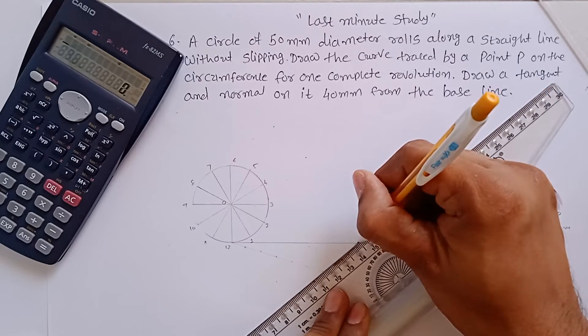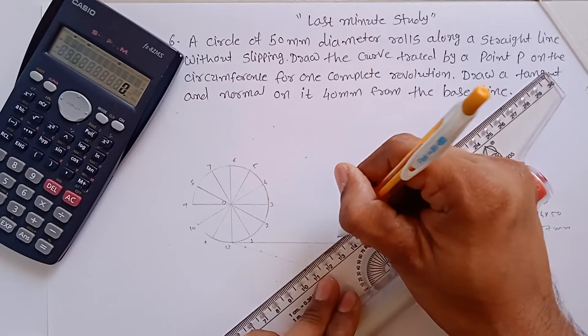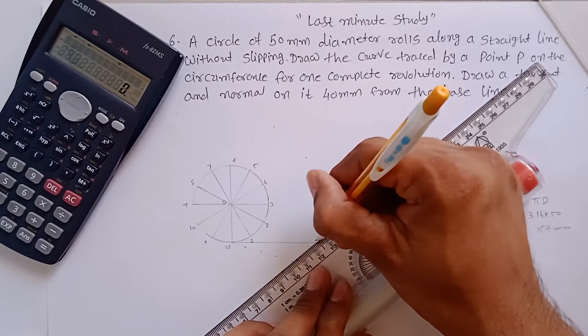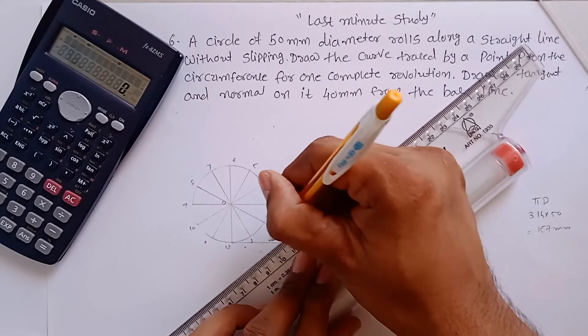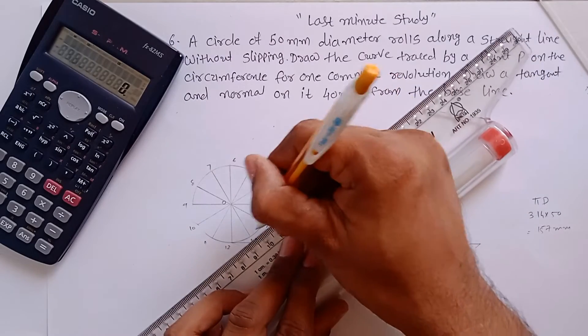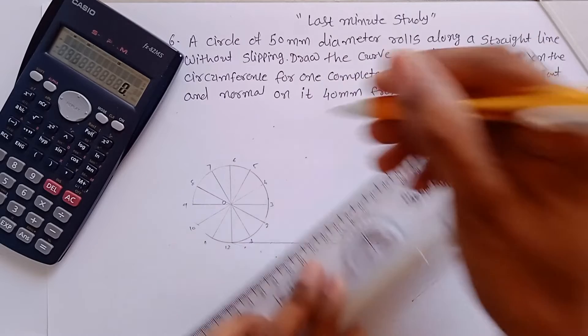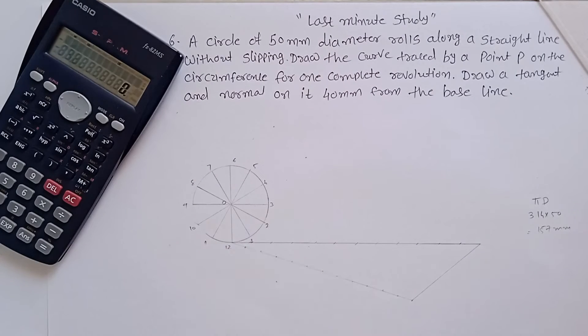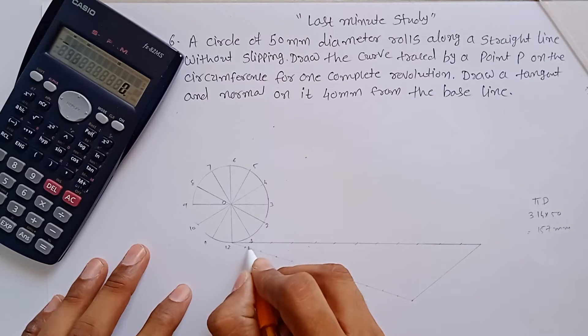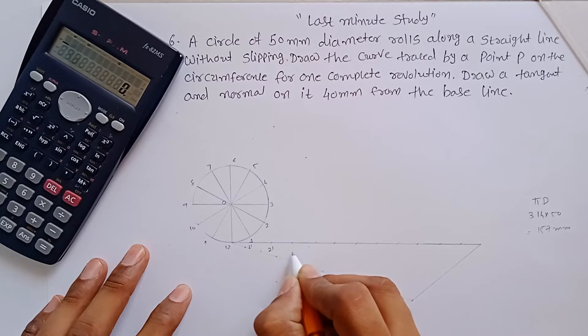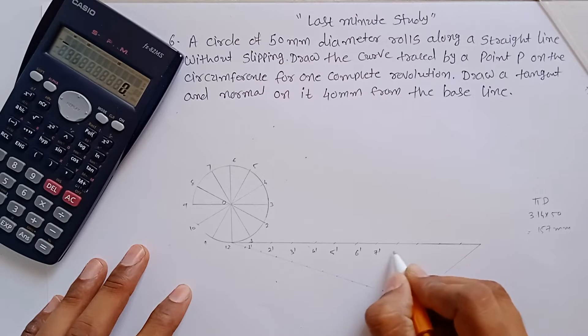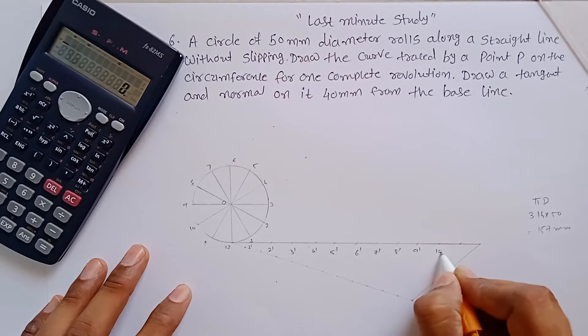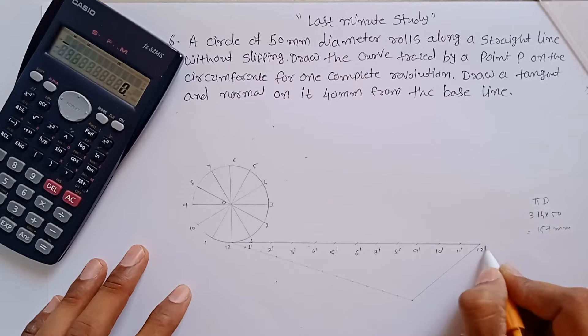These are not an actual part of the drawing; it's just used to construct. You just have to transfer the points like this. We have transferred the points. Now you can erase this as well. Now give names to them: 1 dash, 2 dash, and 12 dash.